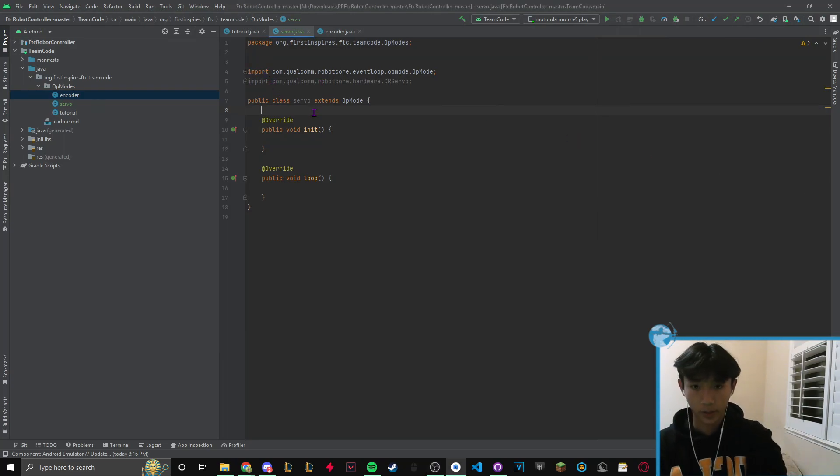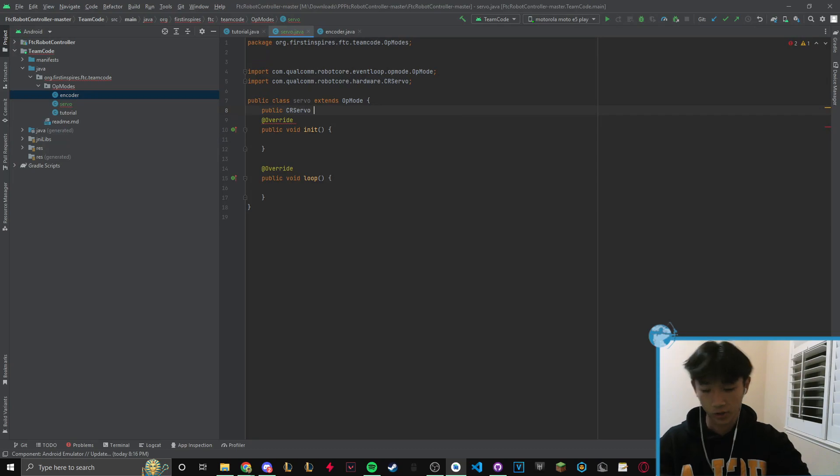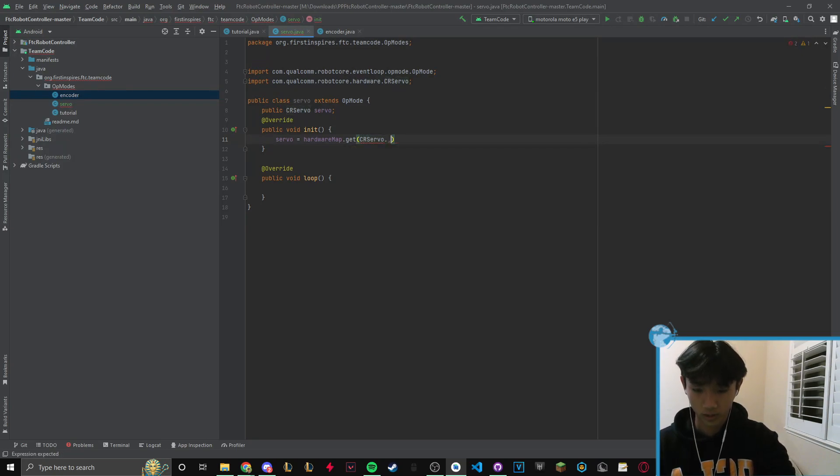Okay, so let's start actually coding a servo. So the first thing we want to do is just do public. So now this is very important. You have to know if you're using CR servo or servo, because if it's servo, then you're just going to do this. But if it's CR servo, then you're going to do this. So let's just call this servo. And then in here, what we're going to do is we're going to do servo equals hardware map.get. And like I said, again, you have to know if you're using CR servo or normal servo. So we're going to do servo.class. And then you have to remember what you named it. So I named it servo.